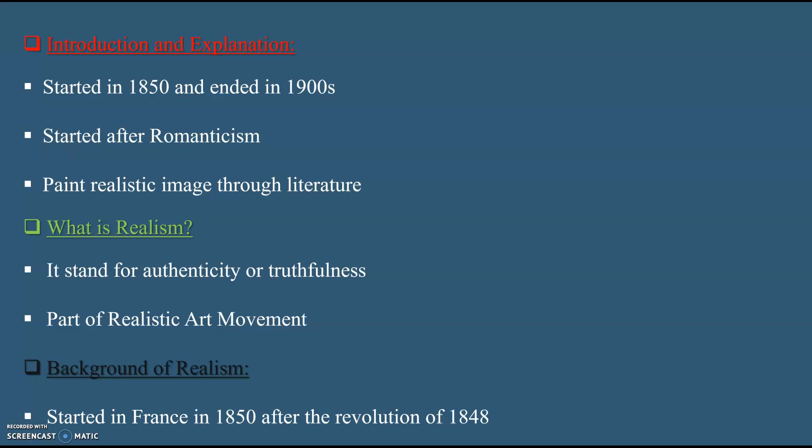So what is Realism? The quality or practice of representing a person, things, or situation accurately, or in a way that is true to life, is called Realism. It stands for Authenticity or Truthfulness. In literature, it is described as a theory in which the natural world or life is represented accurately without the practice of idealizing occurrences of life.